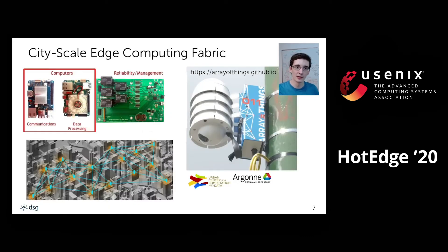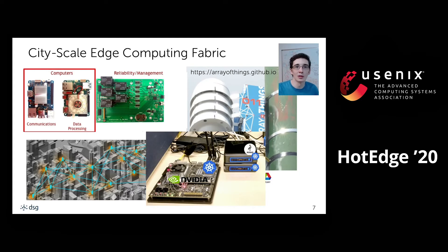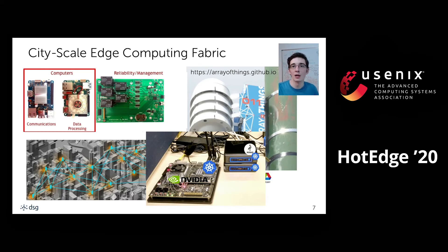A specific existing system in the category of urban sensing is the Array of Things project, which has a deployment of about 200 sensor node boxes in Chicago. These arrays contain sensors and two single board computers that can run some computation, connected mostly via mobile internet. We expand on this idea in the paper by considering proximate edge compute resources for running AI functions.